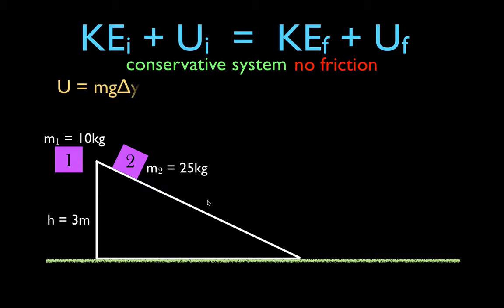Let's remind ourselves: the equation for potential energy is mass times g times the change in height. For kinetic energy, it's one-half the mass times the velocity squared.